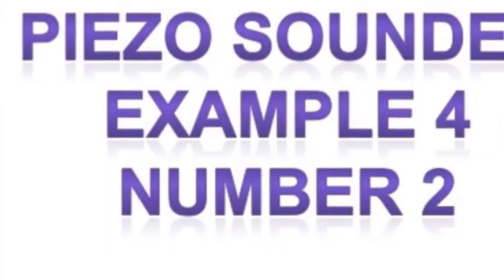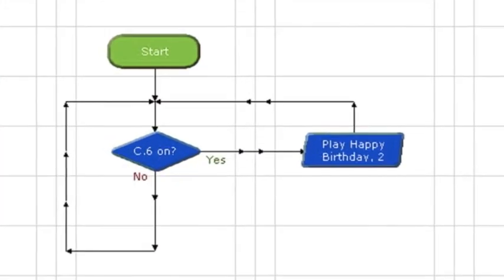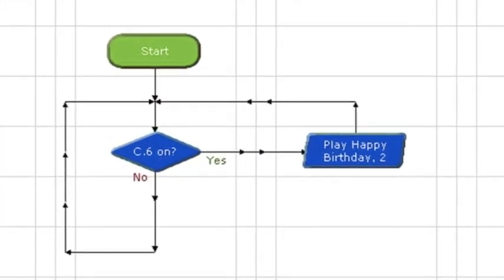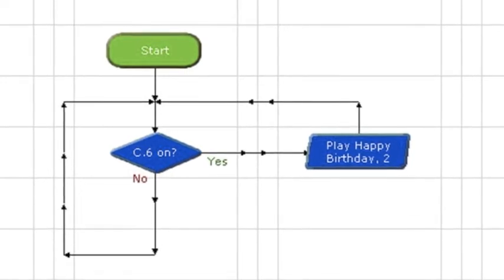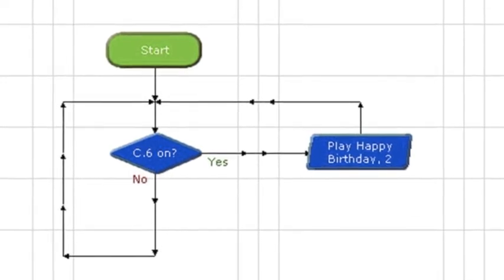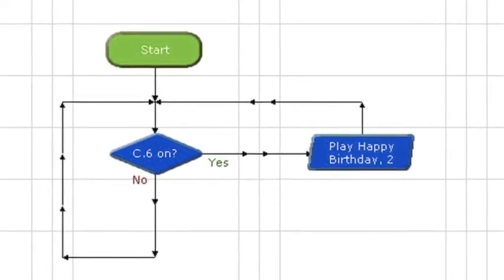Piezo Sounder Example 4 Number 2: Happy Birthday Tune. The Piezo Sounder Happy Birthday will play the Happy Birthday Tune once the button is pressed on the robot. This is showing the Piezo Sounder Example 4 Number 2 program on the Logicator.